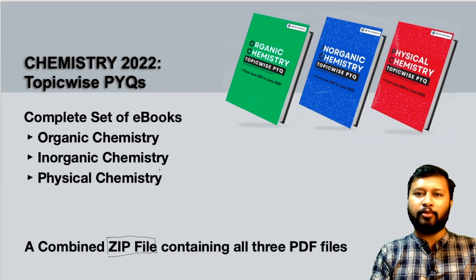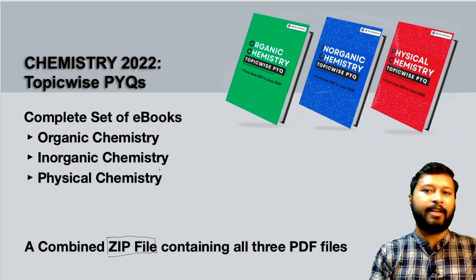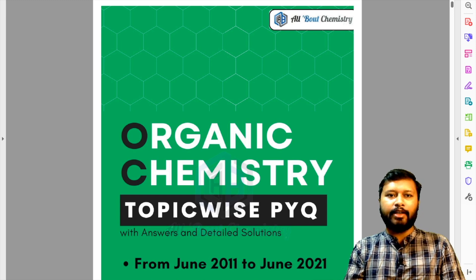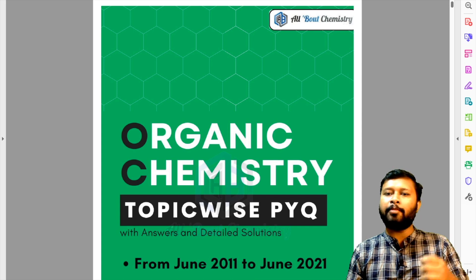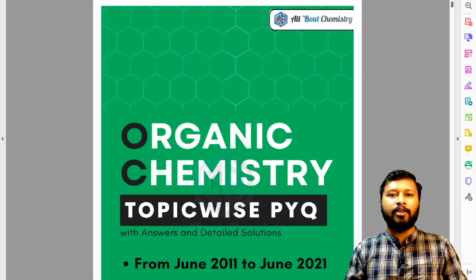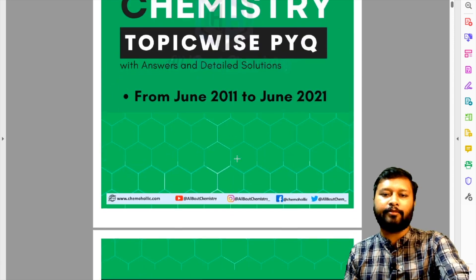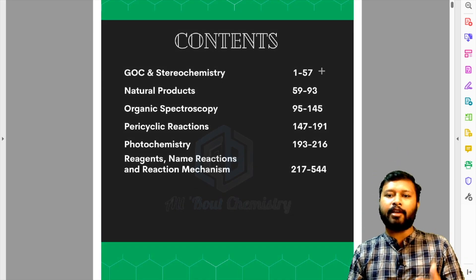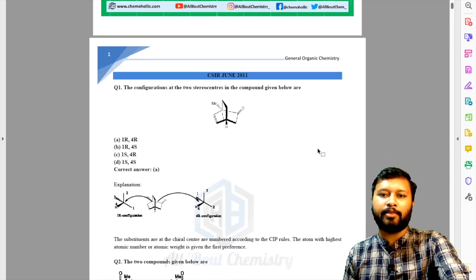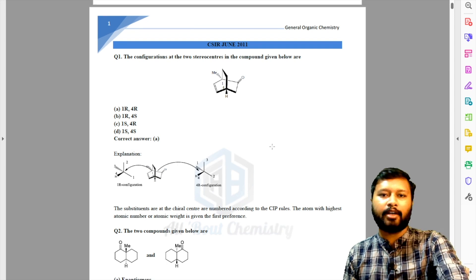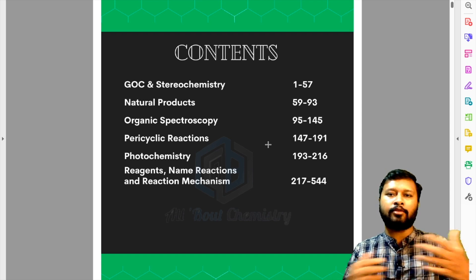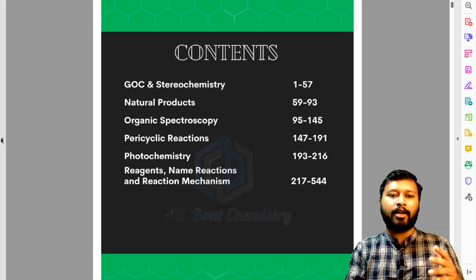Let me quickly show you how exactly these ebooks look and what the bookmarks are useful for. What you're seeing on screen is Adobe Acrobat Reader — the pro version — but it works on the basic Acrobat Reader as well. When you open the organic chemistry ebook, you scroll down a little and here are the contents with chapter names and page numbers. The first chapter is GOC and stereochemistry — you'll see questions followed by the correct answer and then the explanation.